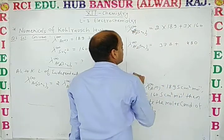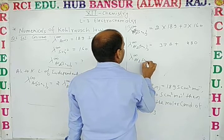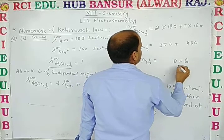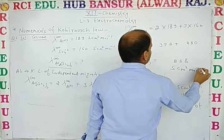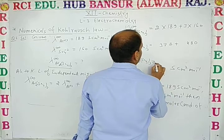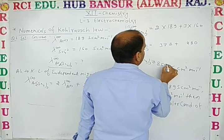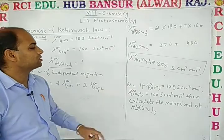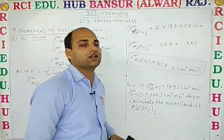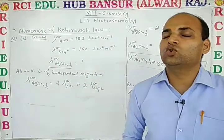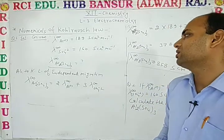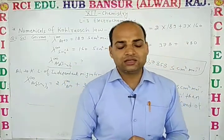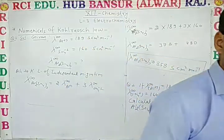Adding both values, λ∞(Al₂(SO₄)₃) = 858 cm² mol⁻¹. That is your answer. Keep the transport number concept in mind while solving numericals. Two more numericals are given for you to solve. That's all for today. I hope the class was clear. Please like, share, and subscribe. Thank you.